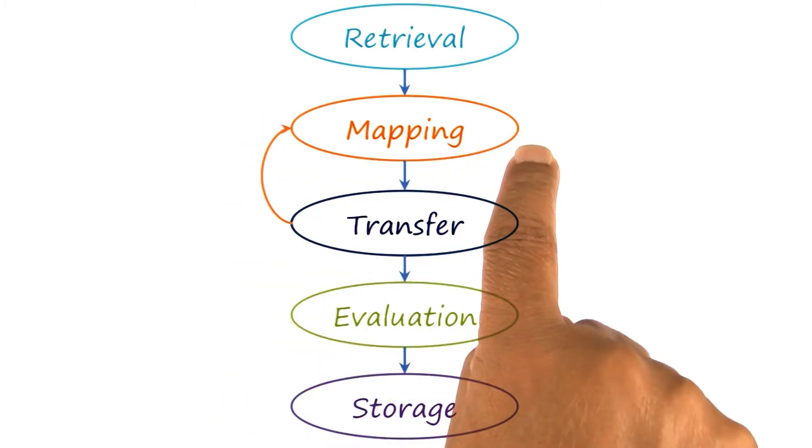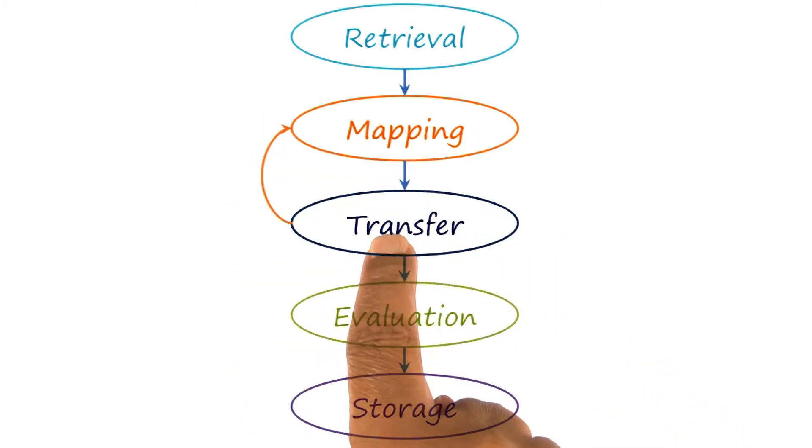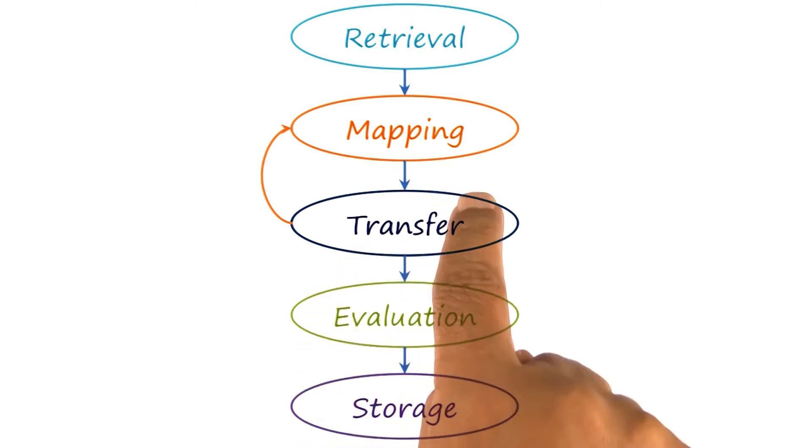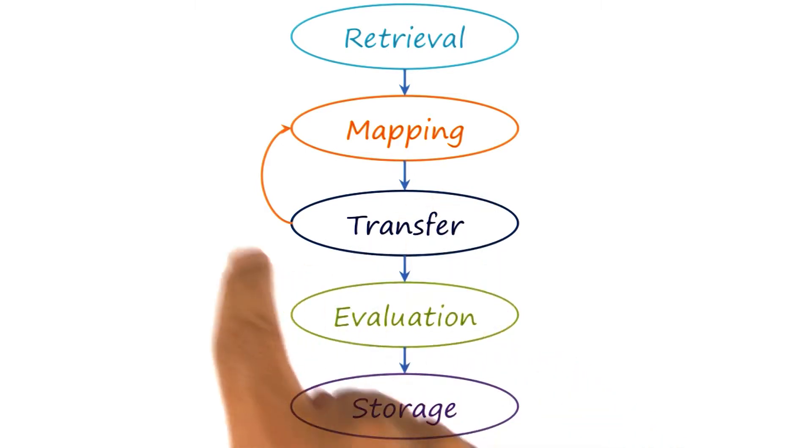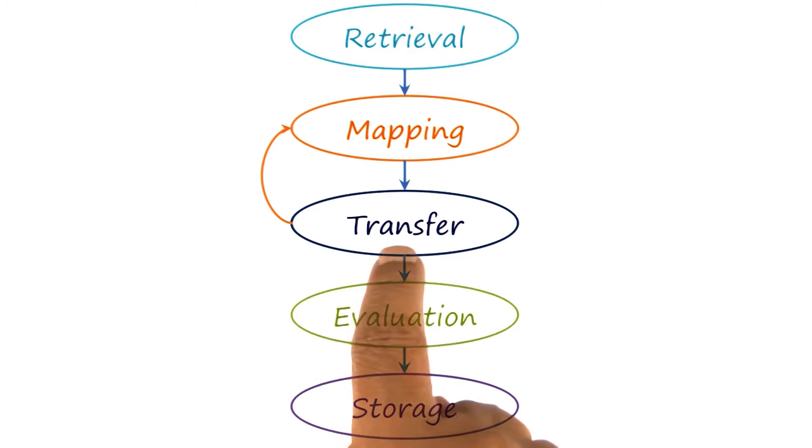We may do some initial mapping, for example. That may result in some transfer of information. But that transfer then may lead to additional mapping, and then to additional transfer, and so on.